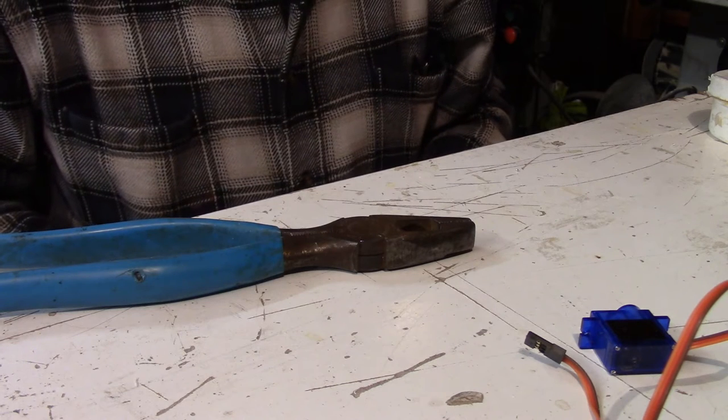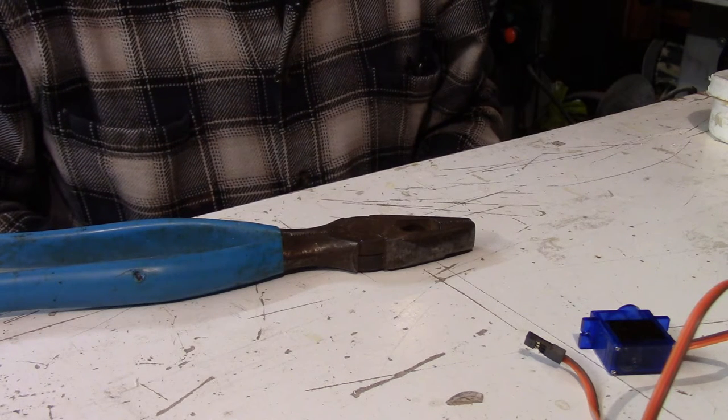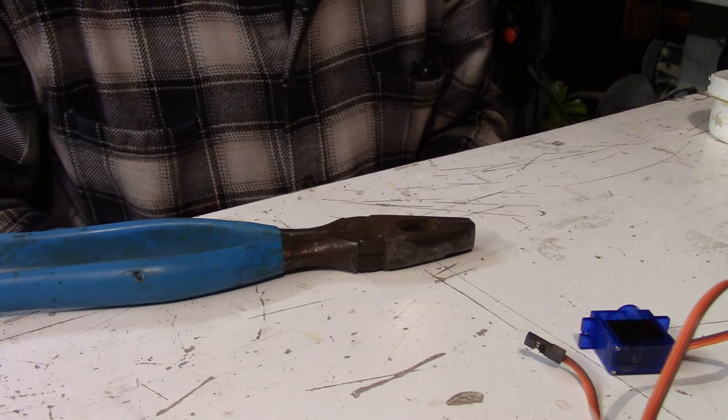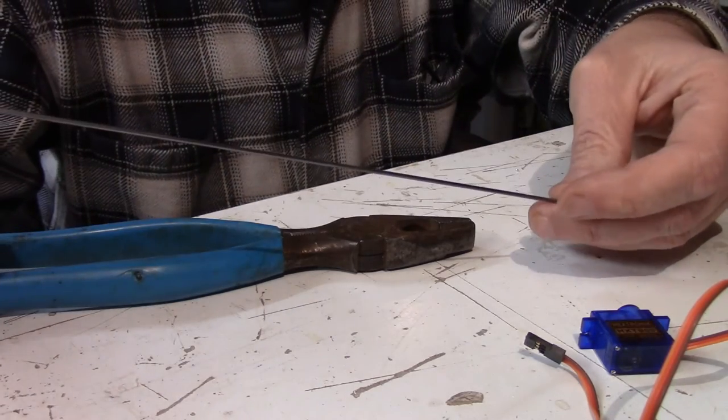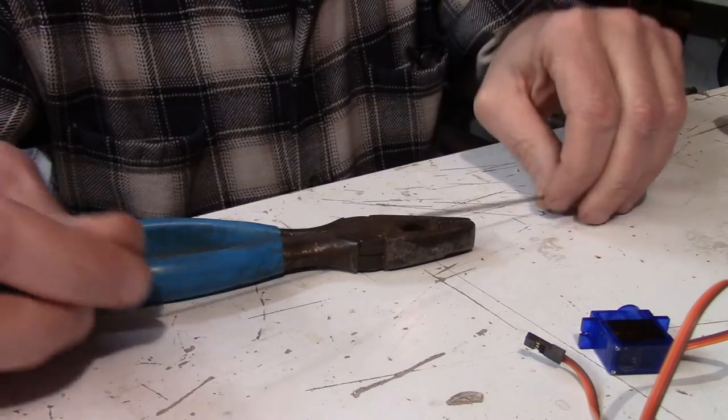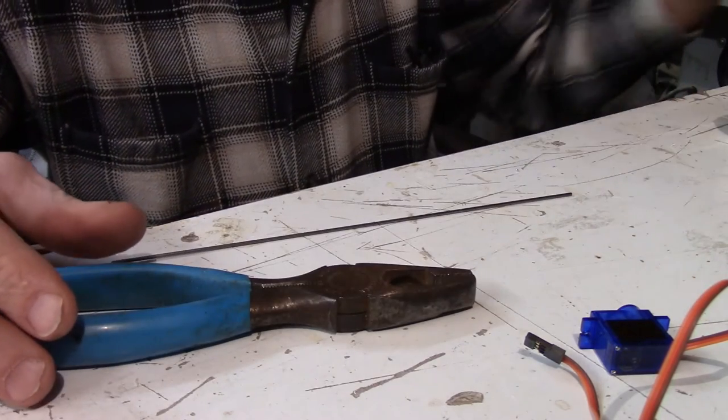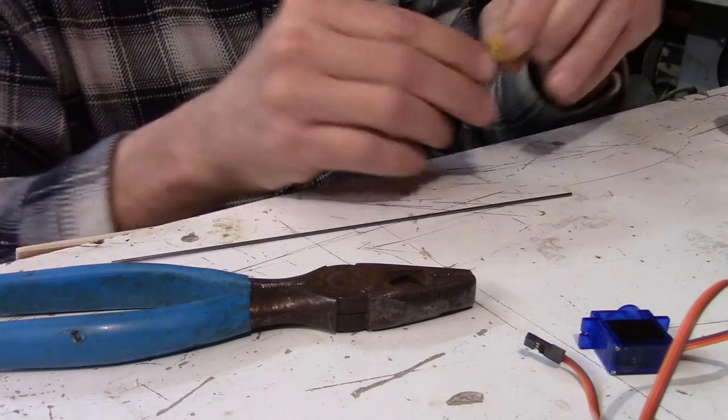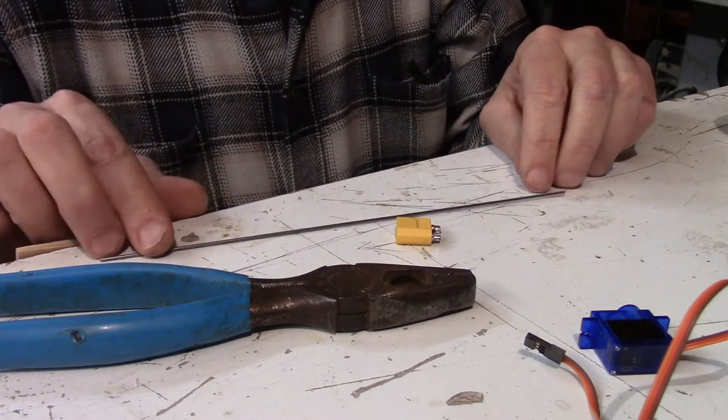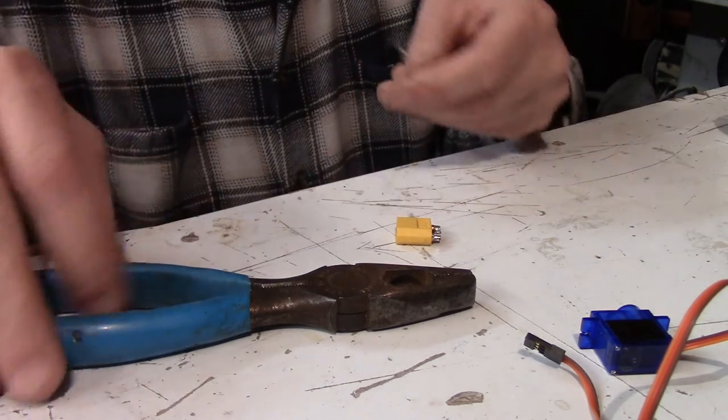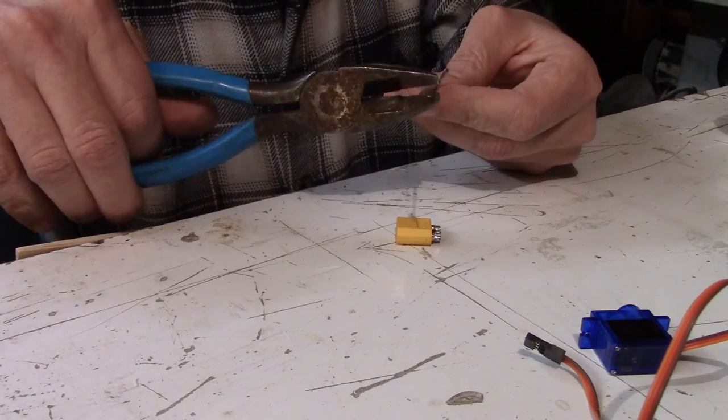Okay for this tool what I thought I would do is show you how I actually make it. It's a plunge tool that I use to make pockets in the wing for servos. So I start out with 1/16th piano wire and also XT60 plugs which I get at Hobby King but you can get them at various places.